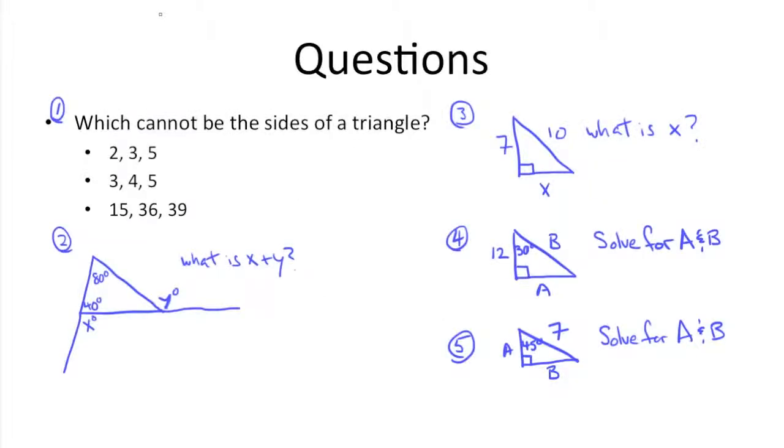Hey guys, so let's go over some of those questions at the end of the last episode on triangles. Number one, which cannot be the sides of a triangle? If you remember some of the triangle facts we went over, you know that two sides have to add up to be greater than the third side in order for those three numbers to be sides of a triangle.